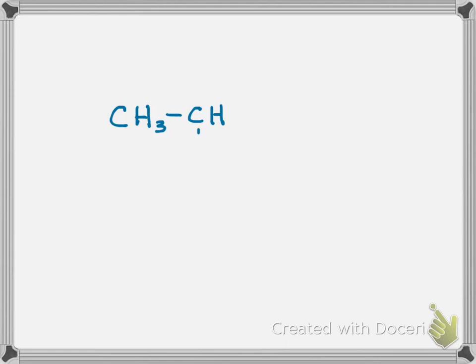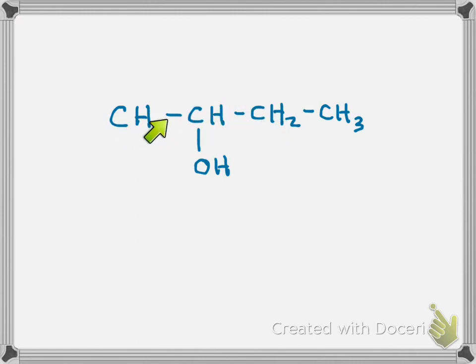I'm going to pick a different alcohol — this is 2-butanol. The first thing you have to do is identify the hydrogens next to the alcohol functional group. The OH is on a carbon between two carbons, and those two carbons aren't the same: one has three hydrogens on it and the other has two.